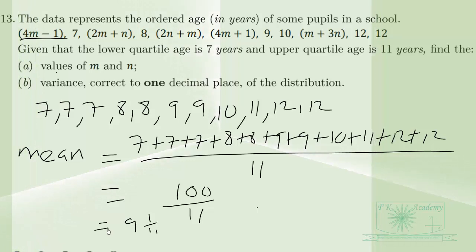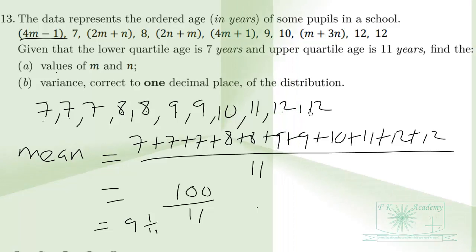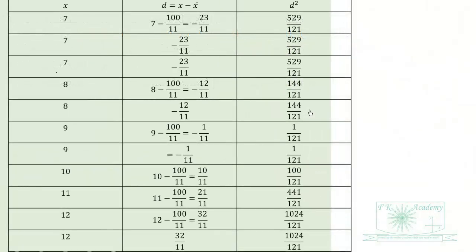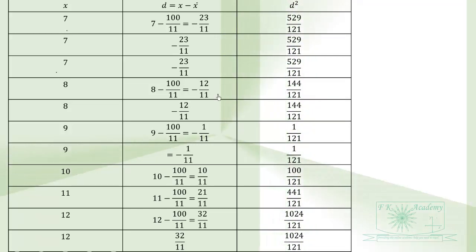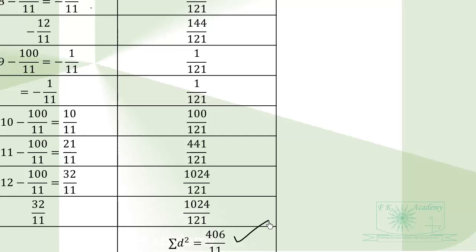To calculate the variance, we subtract the mean from each value, square the results, sum everything, and divide by n = 11. Setting this up in a table: subtracting the mean from 7 gives −23/11, from 8 gives −12/11, and so on for 9, 10, and 12. After squaring and summing all deviations, we get 406/11.